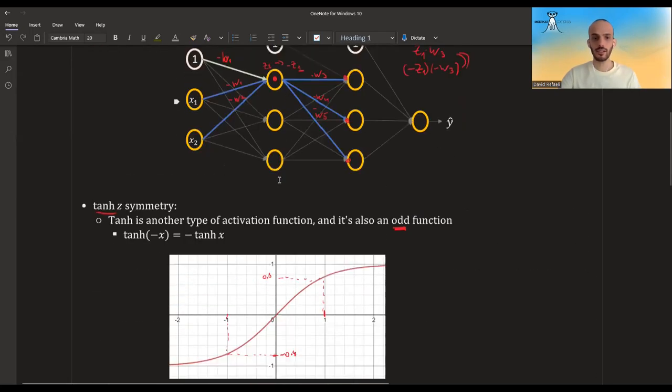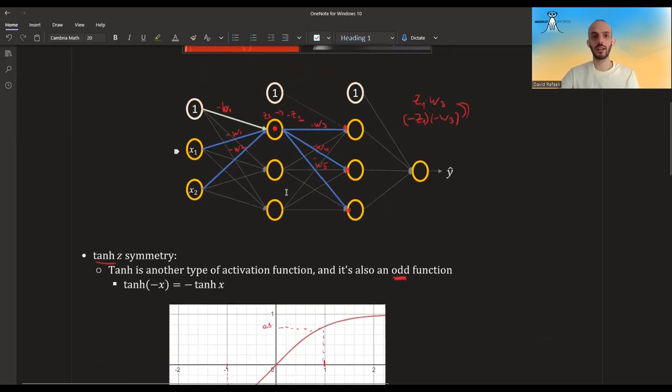For each node, we have two different set of weights that can produce exactly the same network. Either b1, w1, w2, and w3, w4, w5, or minus b1, minus w1, minus w2, and minus w3, minus w4, and minus w5.